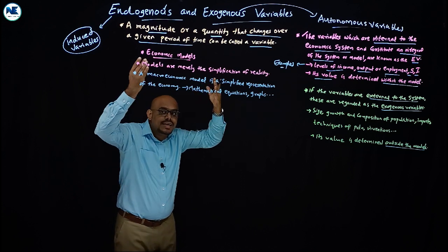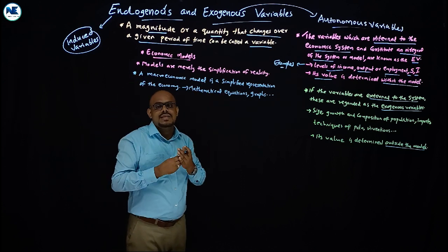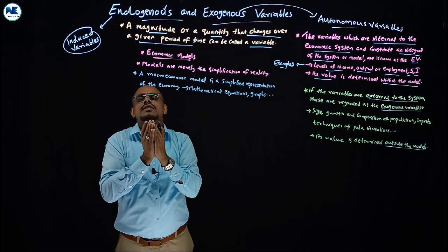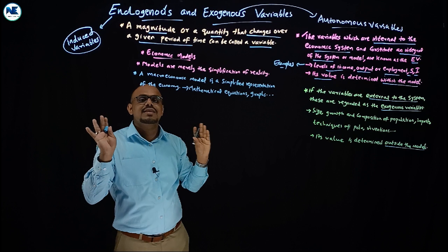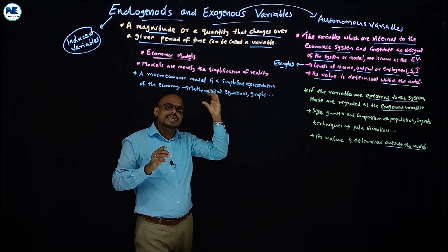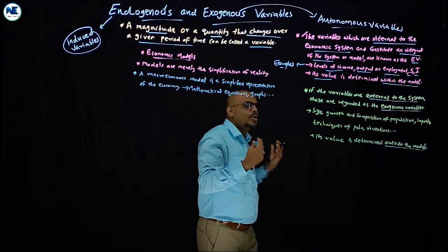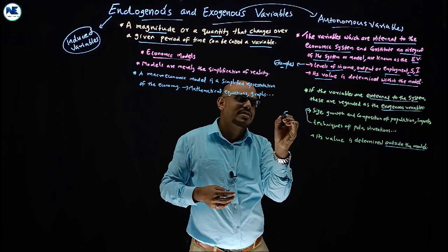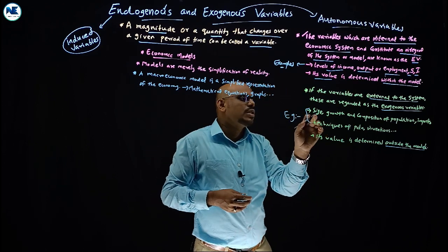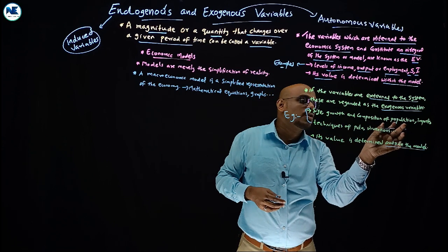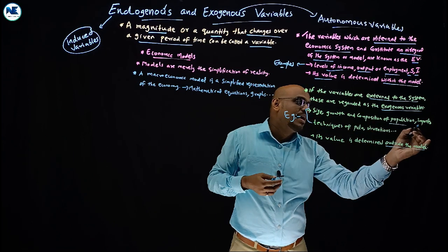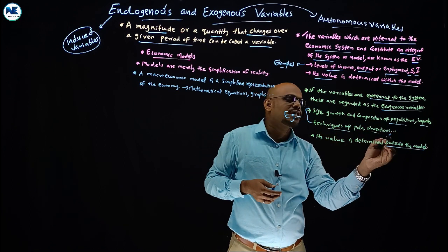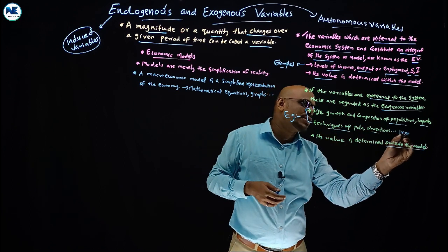Outside the model, the value is determined. That is why these are considered external to the economic model. Examples of exogenous variables include: size, growth and composition of population, imports, exports, techniques of production, inventions, and innovations.